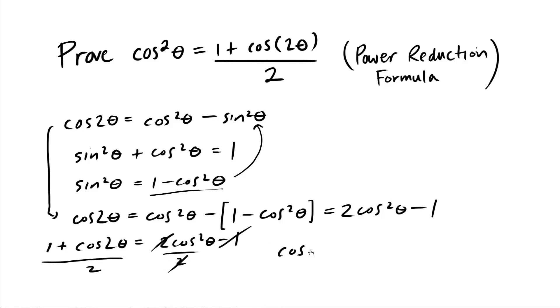And so what we have is cosine squared theta equals 1 plus cosine 2 theta all over 2, which is what we were trying to prove initially.